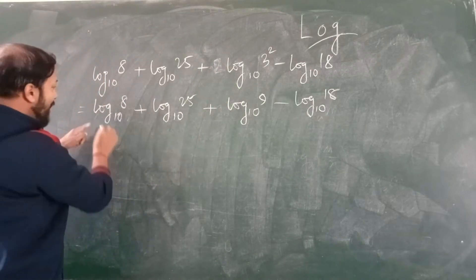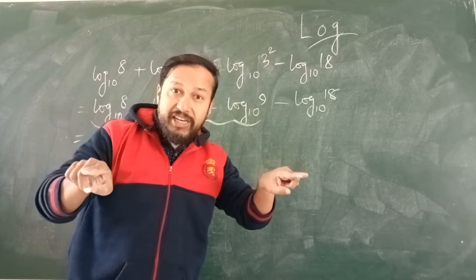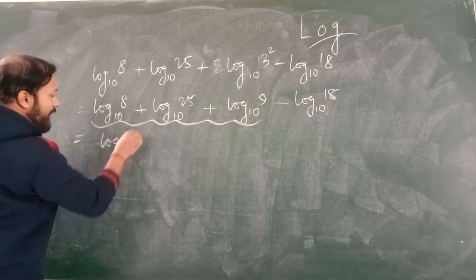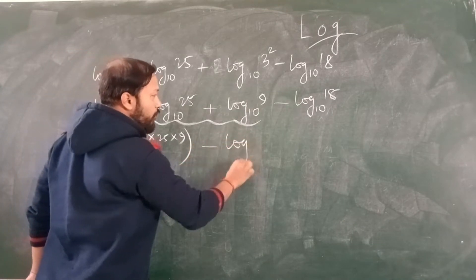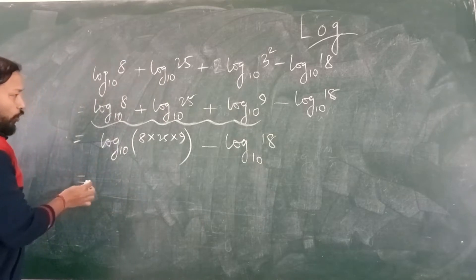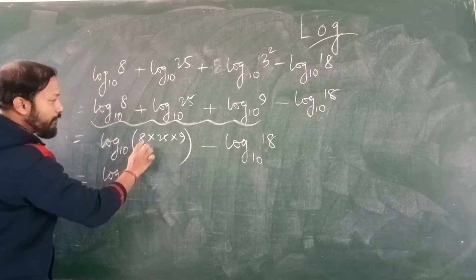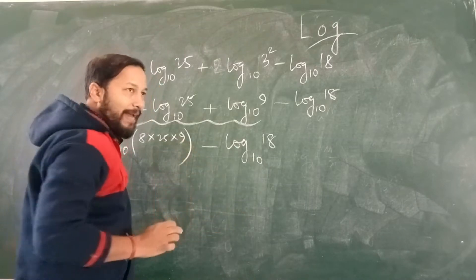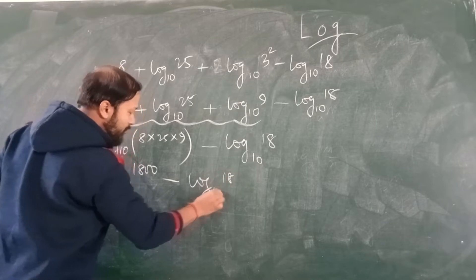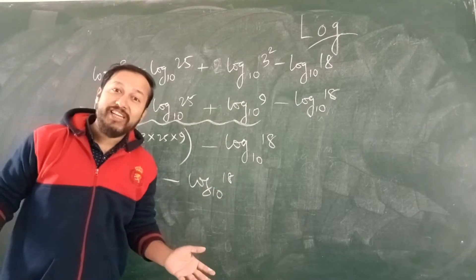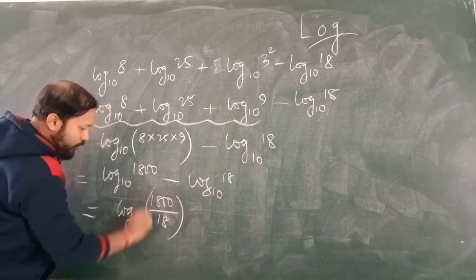Now, for this expression we can use the multiplication formula — where multiplication splits into addition. So I can write log base 10 of 8×25×9, minus log base 10 of 18. Let us multiply: 8×25 = 200, and 200×9 = 1800. So it becomes log of 1800 to base 10 minus log of 18 to base 10.